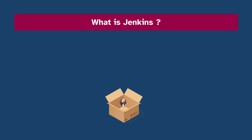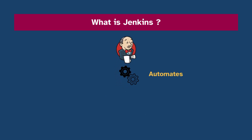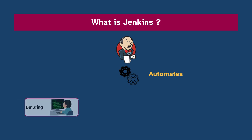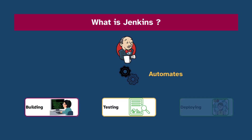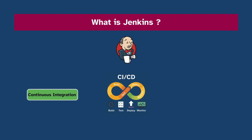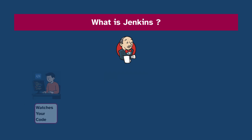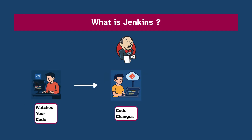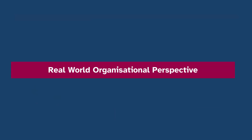Jenkins is an open-source automation server — it helps you automate tasks like building your code, testing it, and deploying it. The biggest reason people love Jenkins is because it supports CI/CD, which stands for Continuous Integration and Continuous Delivery. Think of Jenkins like your smart assistant: once you set it up, it watches your code, and whenever there's a change, it goes into action.